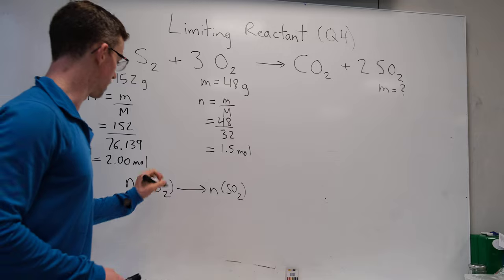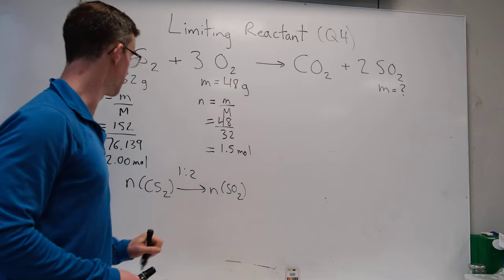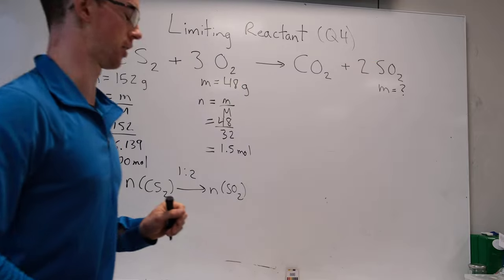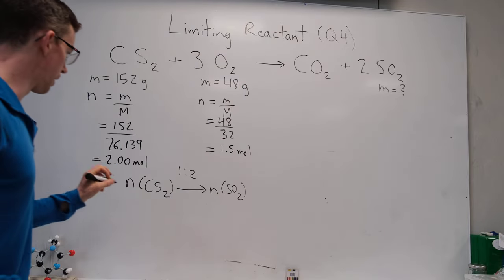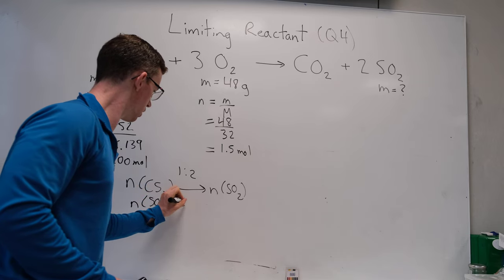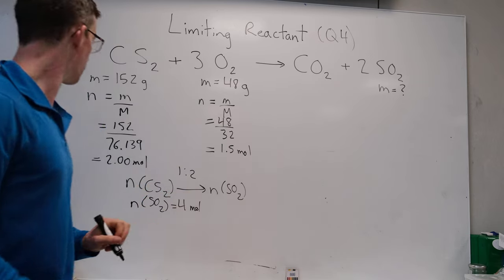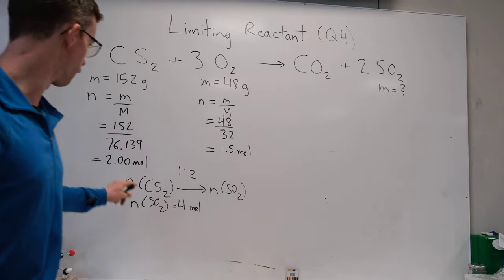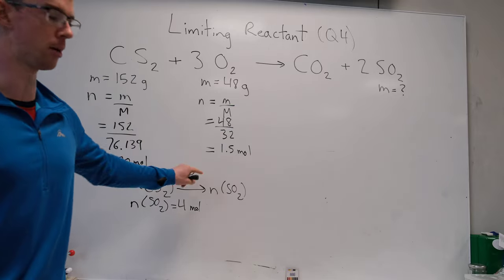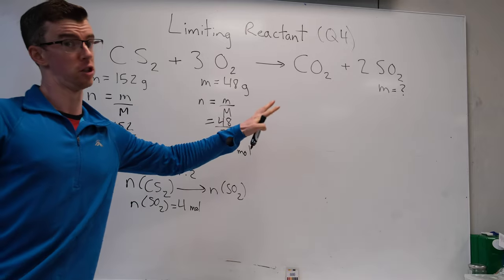And we see that it's a 1 to 2 ratio. There's 1 mole of that, 2 moles of sulfur dioxide. So we're going to find that we can form 4 moles of sulfur dioxide from 2 moles of carbon disulfide simply by doubling it, assuming we have unlimited amount of oxygen.